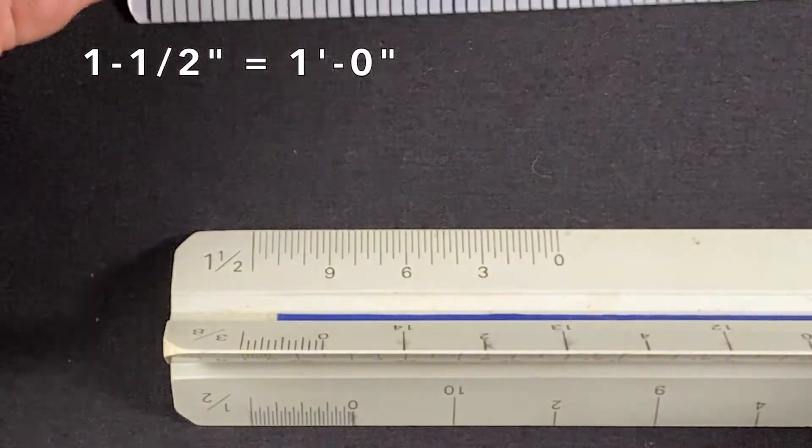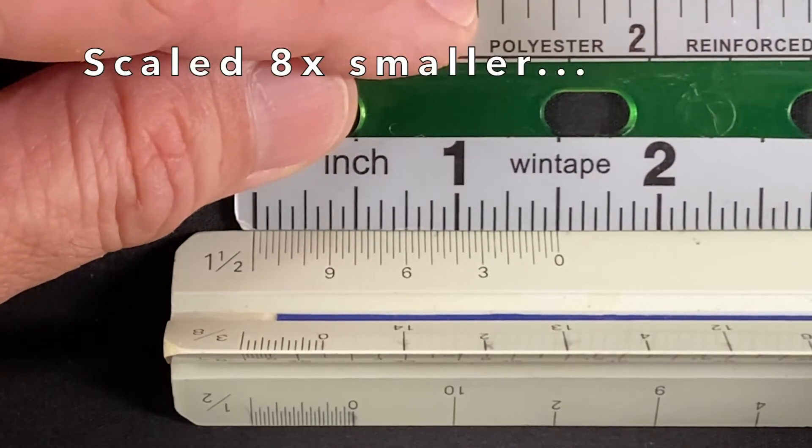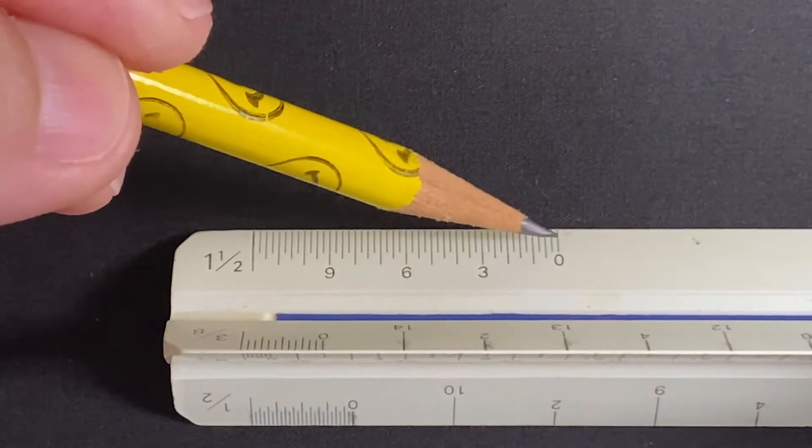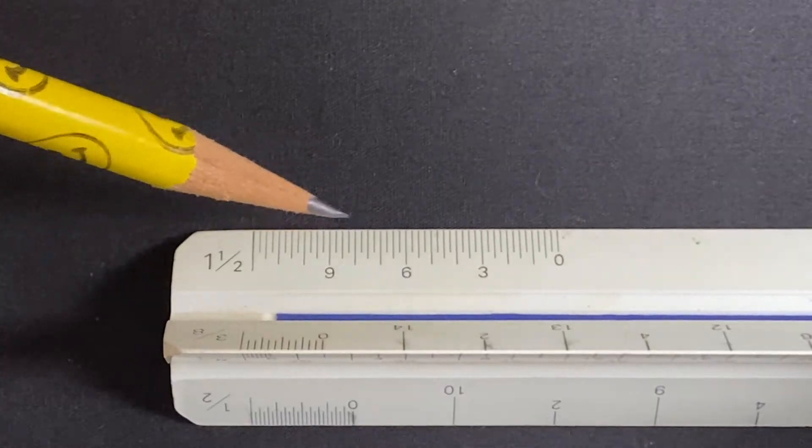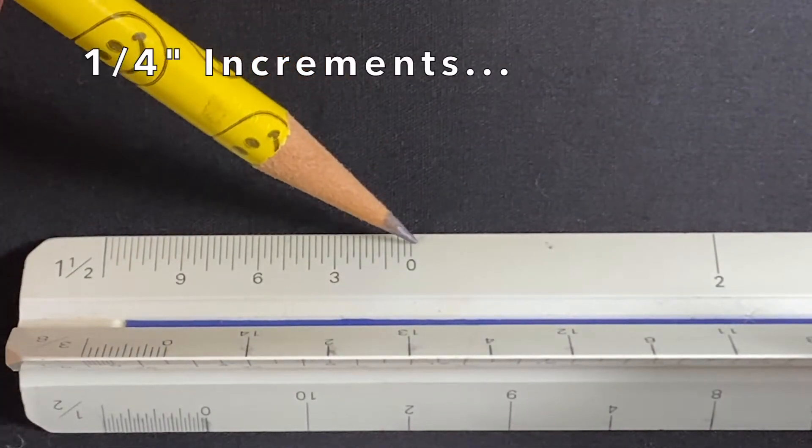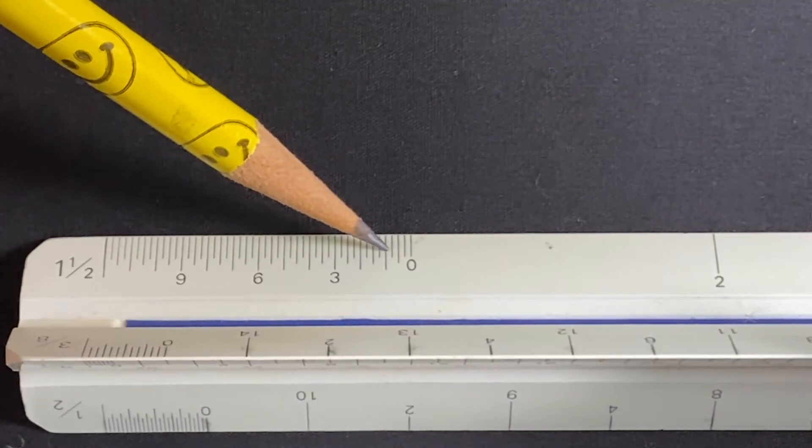And jumping over to the inch and a half scale, which is scaled back eight times smaller than actual size. Each eighth of an inch equals an inch, one, two, three, four, five, six. And each increment equals a quarter of an inch, one quarter, one half, three quarter, one inch.